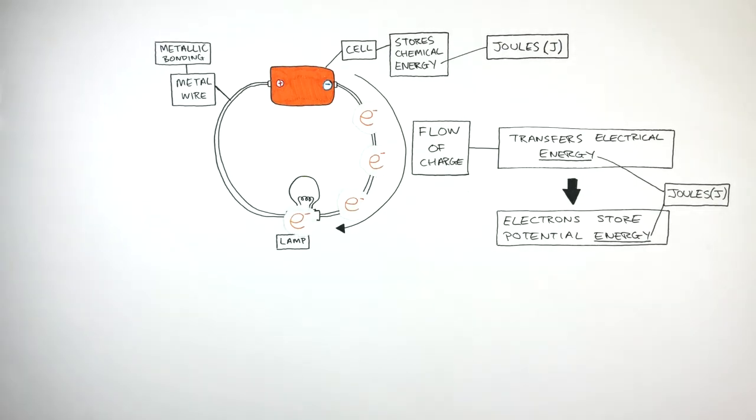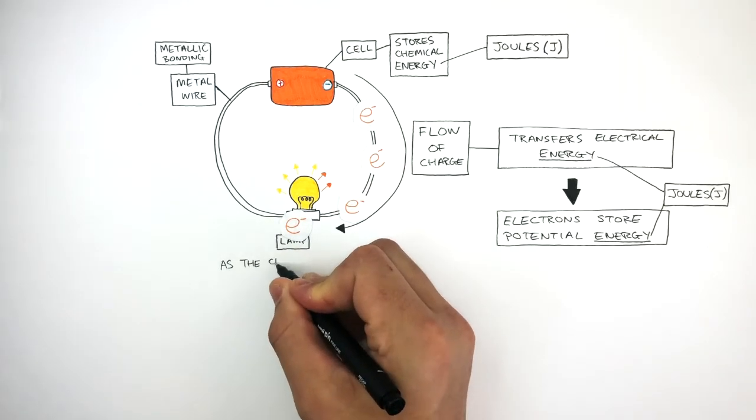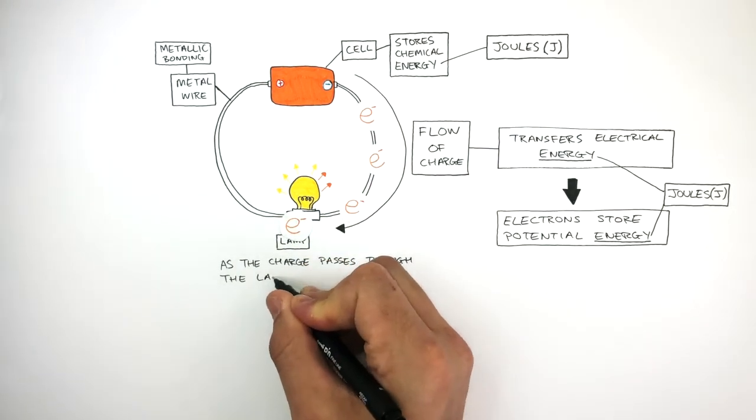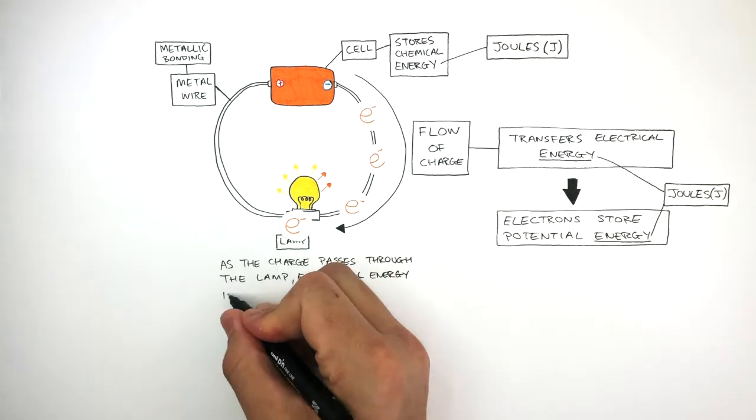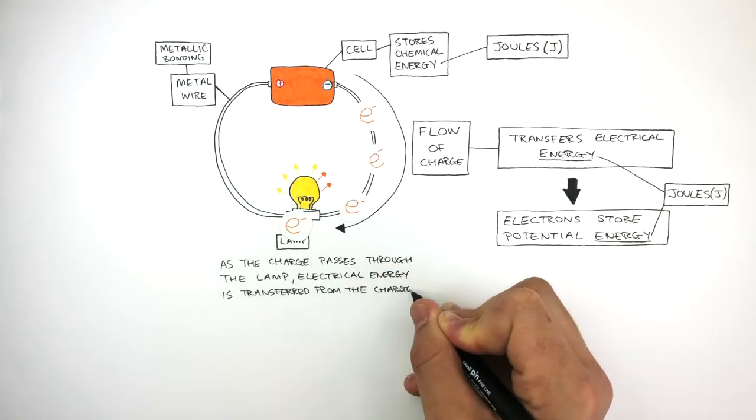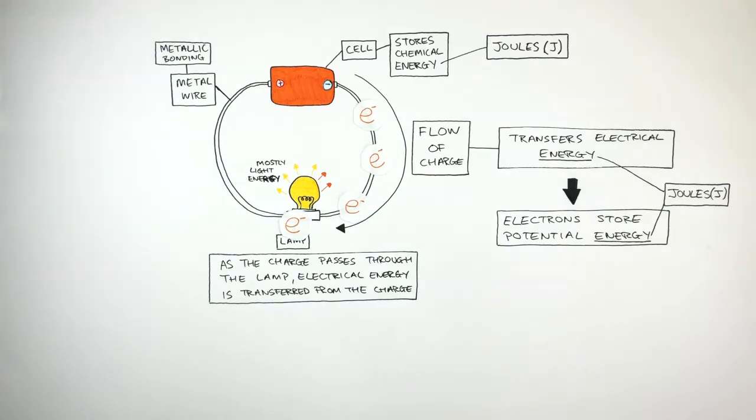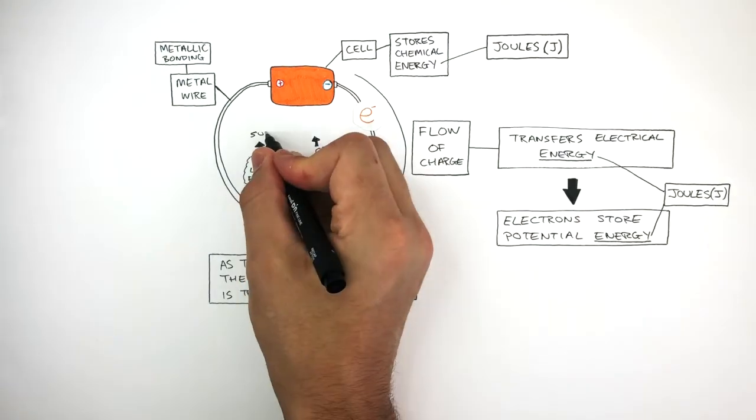As the flow of charge passes through the lamp, the lamp turns on. As the charge passes through the lamp, the electrical energy is transferred from the charge. This energy is transferred via light to the thermal energy stores of the surroundings.